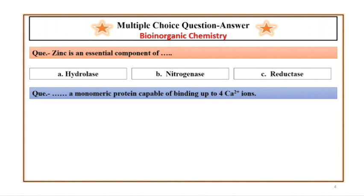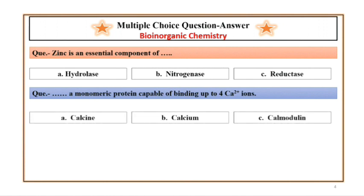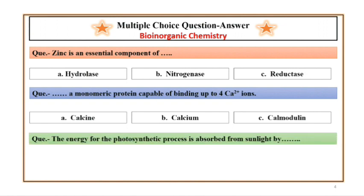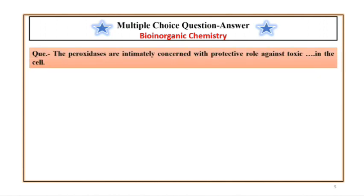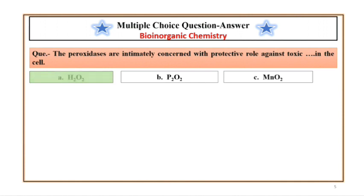Dash-dash is a monomeric protein capable of binding up to 4 Ca2+ ions. Answer: Calmodulin. The energy for the photosynthetic process is absorbed from sunlight by — Answer: Chlorophyll A1. The peroxidases are intimately concerned with a protective role against toxic dash-dash in the cell. Answer: H2O2.